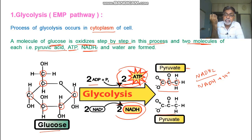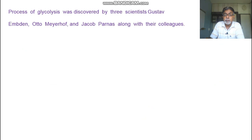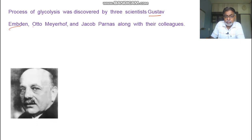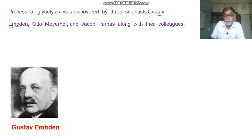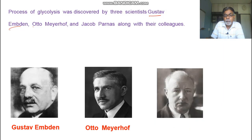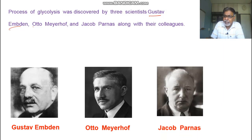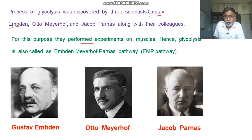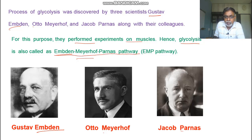Glycolysis is called the EMP pathway because it was discovered by three scientists: Gustav Embden, Otto Meyerhof, and Jacob Parnas. They performed experiments on muscle tissue, and hence glycolysis is also called the Embden-Meyerhof-Parnas pathway, or EMP pathway.